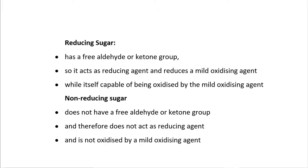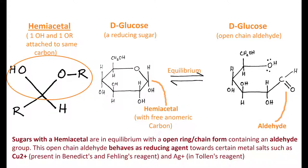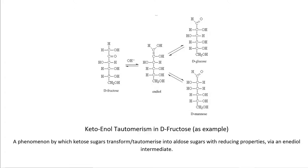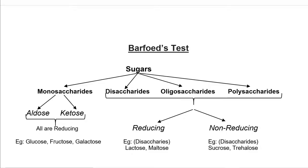All monosaccharides are called reducing sugars because they contain hemiacetal or hemiketal groups which are in equilibrium with an open chain aldehyde or ketone group respectively, and can therefore act as powerful reducing agents in certain biochemical reactions. However, for a ketose sugar to become a reducing sugar, it has to first tautomerize into aldehyde-containing aldose sugars via an enediol intermediate, as can be seen here with fructose as an example.